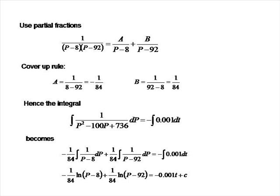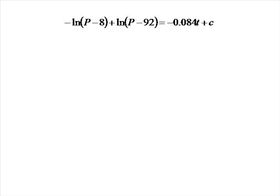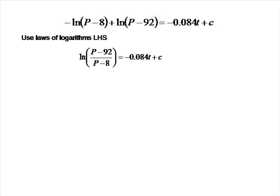Let's multiply through by 84, giving us: minus log(p minus 8) plus log(p minus 92) equals minus 0.084t plus a constant c. A multiple of a constant is still a constant, so we leave it as c. The left-hand side is the difference of two logs, so by the laws of logarithms we can write it as the natural logarithm of (p minus 92) over (p minus 8).